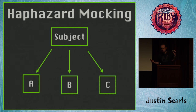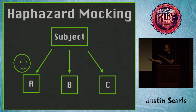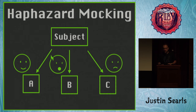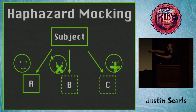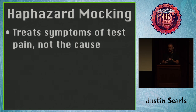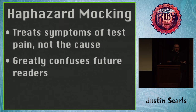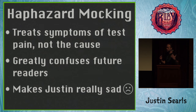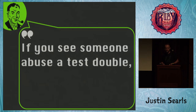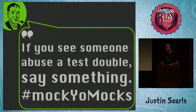Most people don't have this nuanced relationship with mock objects. Most people try to write a realistic test — some dependencies are easy to wire up, but some are a pain to set up or instantiate, so they just use mocks as a cudgel to shut up the hard dependencies. They get the test passing, they're exhausted, they push it up. But really, what they did treats the symptom of that test pain — not the root cause that they've got bad relationships with their dependencies. It confuses future readers because now they don't know what's really being tested. So I implore all of you: if you see somebody abuse a test double, please say something. Feel free to hashtag it 'mock your mocks' and I'll follow along.